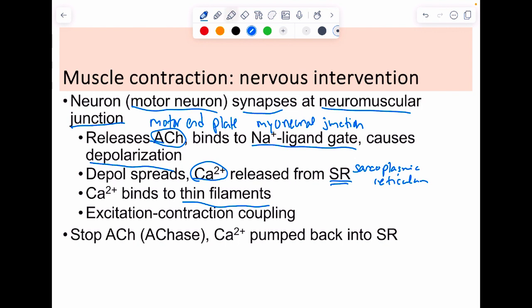We refer to all of this as excitation-contraction coupling. If we get the excitation, we'll get the contraction. The way we stop this process is we use an enzyme called acetylcholine esterase, which destroys the acetylcholine, which allows the calcium ions to be pumped back into the SR.